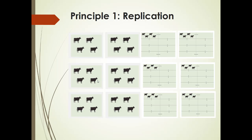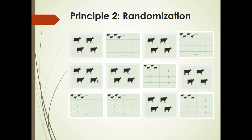So the second principle of experimental design is randomization. We need to assign the treatments to the experimental units at random — not just mix it up a little, but truly random. We don't trust anybody, and the only thing we trust is randomness. We could say there might be a trend from left to right, but if you do it systematically there could be another trend in another direction. There are always many different variables, so we need to apply the treatments at random.